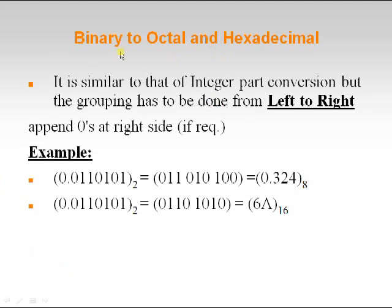Now let us see how to convert binary fractional to octal and hexadecimal. It is similar to integer part conversion but the grouping has to be done from left to right. Append zeros at the right side if required. We follow the same grouping procedure as for integer binary to octal and hexadecimal conversion.